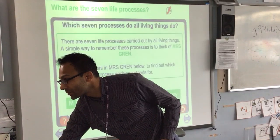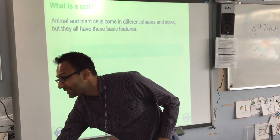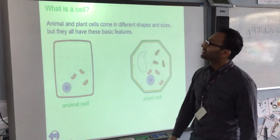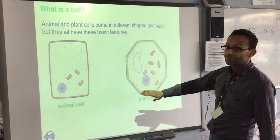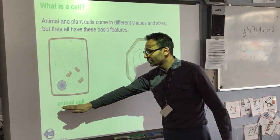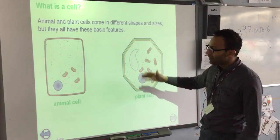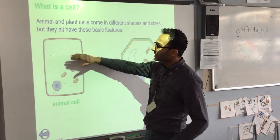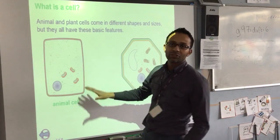Now, moving on to the two types of cells. The two types of cells are predominantly animal and plant cells. Our main focus today is animal cells. So, what is the structure of animal cells?